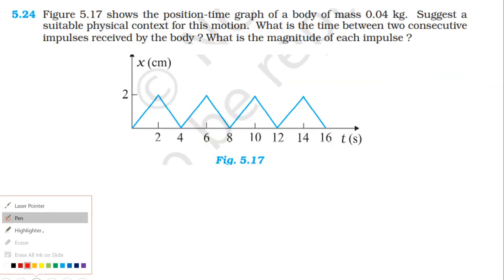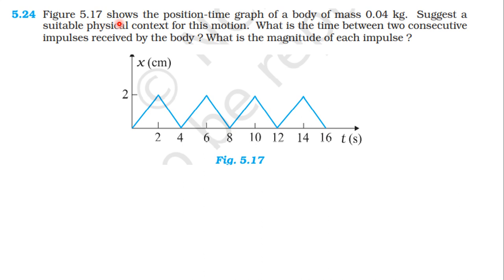Next question: Figure 5.17 shows the position-time graph for a body of mass 0.04 kg. Suggest a suitable physical context for this motion. What is the time between two consecutive impulses received by the body? What is the magnitude of each impulse? From the position-time graph, the slope gives the speed.